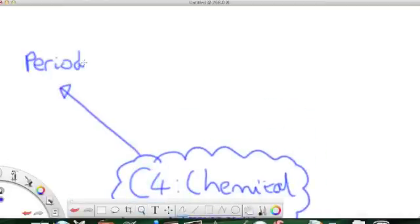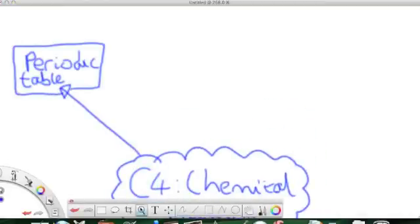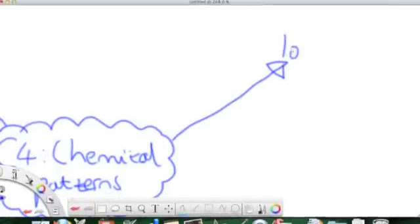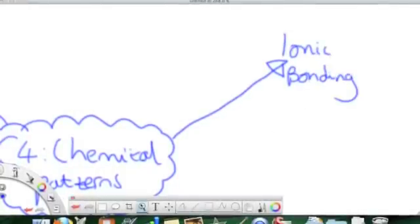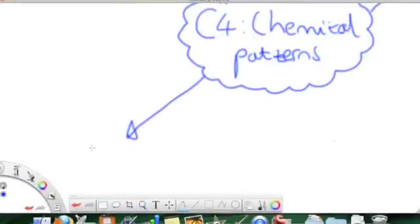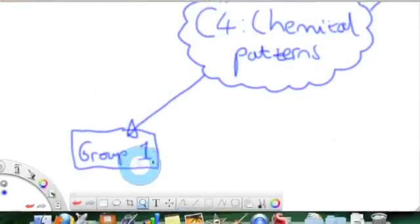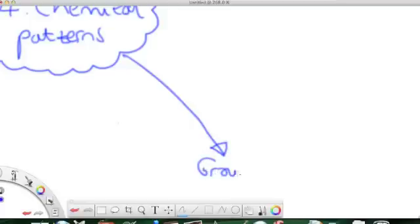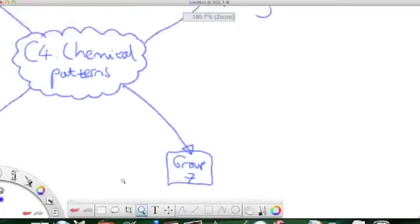The first one is looking at the periodic table. The second one is looking at ionic bonding. The third one we're going to look at is the group 1 elements, and the fourth one is looking at the group 7 elements.